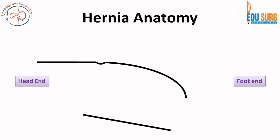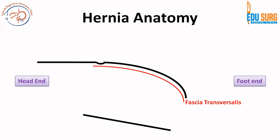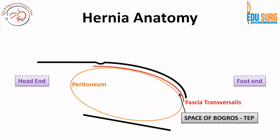Let us go into the very basic concepts — these are very important concepts to understand, and throughout the series these terms will be used, so understand these concepts very carefully. When the patient is lying down, at the head end and the foot end as shown here, the abdominal wall anatomy is what we are interested in. Fascia transversalis is one structure that you need to remember, and the other is peritoneum. Important structures that we are going to see in this series include fascia transversalis and the peritoneum, and the first term that you need to understand is the space of Bogros.